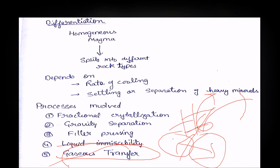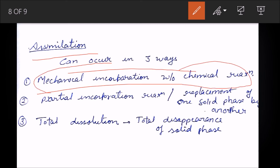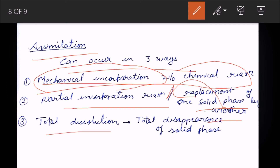Next is assimilation, which occurs in three ways. First, mechanical incorporation — the magma acquires another rock physically, with no chemical reaction involved. Second, partial incorporation — reaction and replacement of a solid phase by another solid phase. Third, total dissolution — total disappearance of a solid phase from the magma.